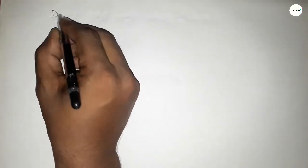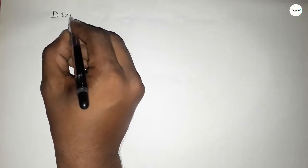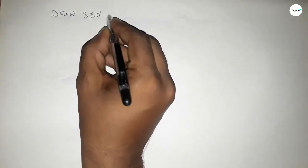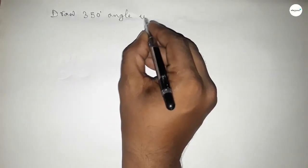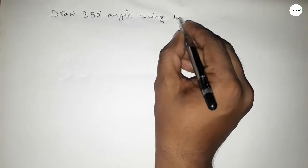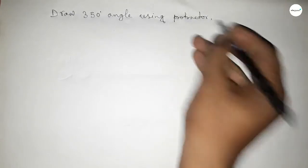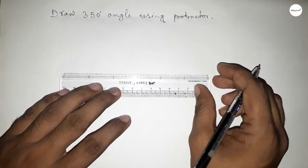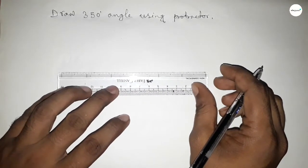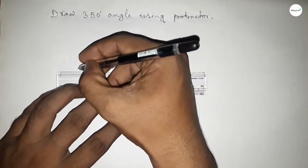Hi everyone, welcome to SSR Classes. Today in this video we have to draw a 350 degree angle by using a protractor. So let's start the video. First of all, we have to draw here a straight line of any length.